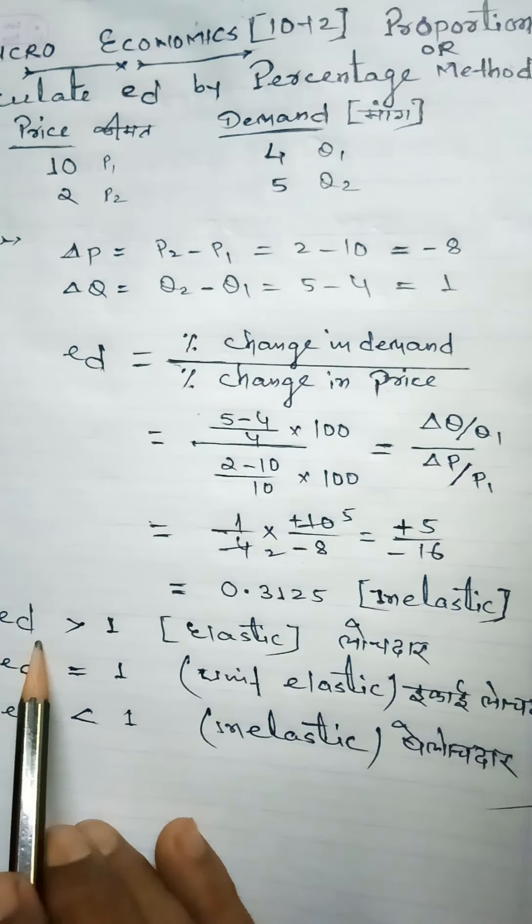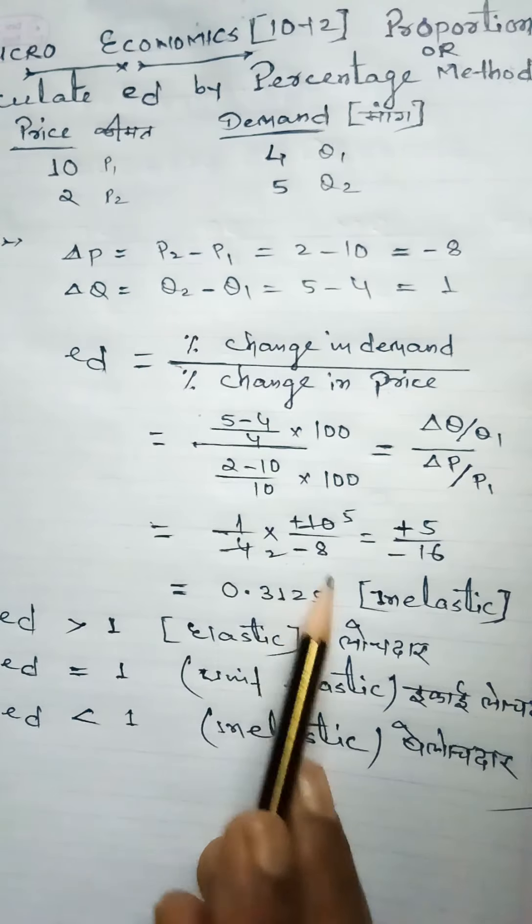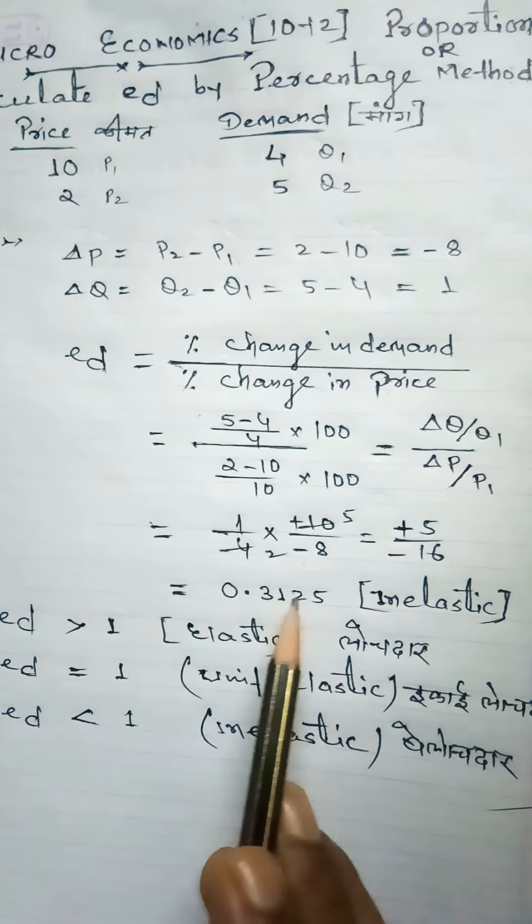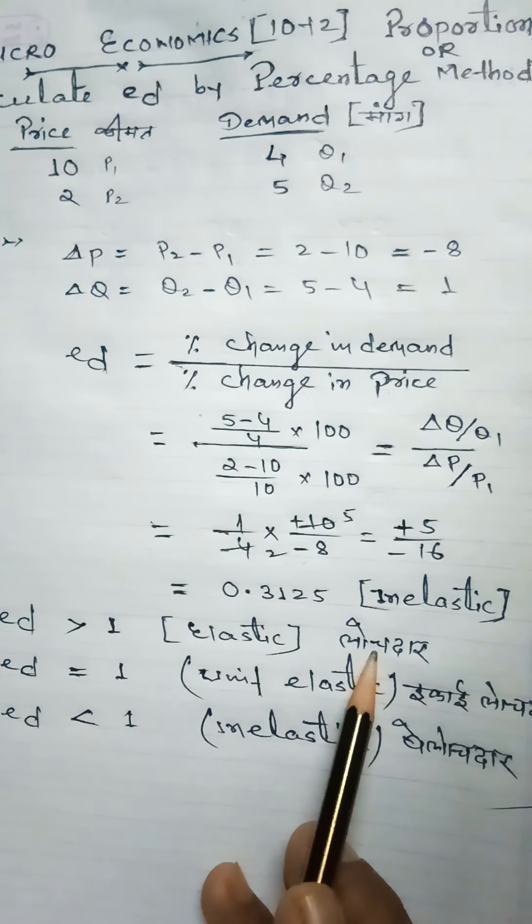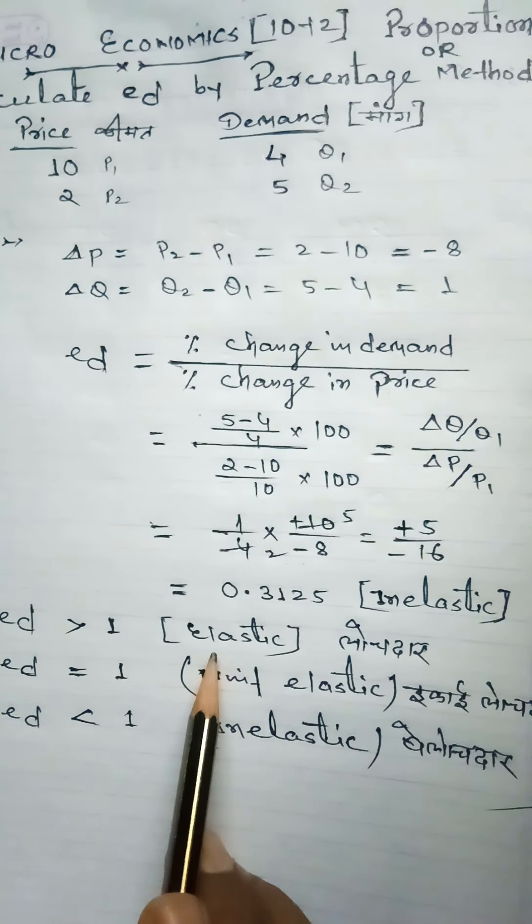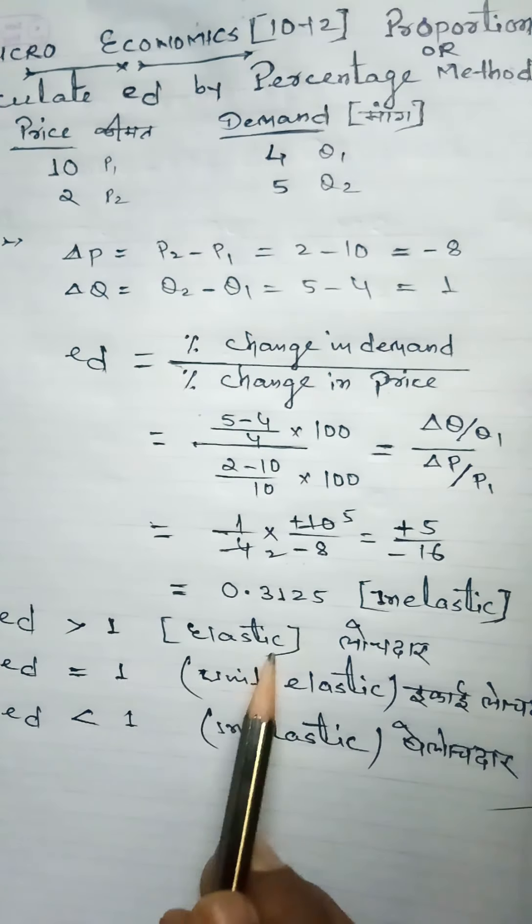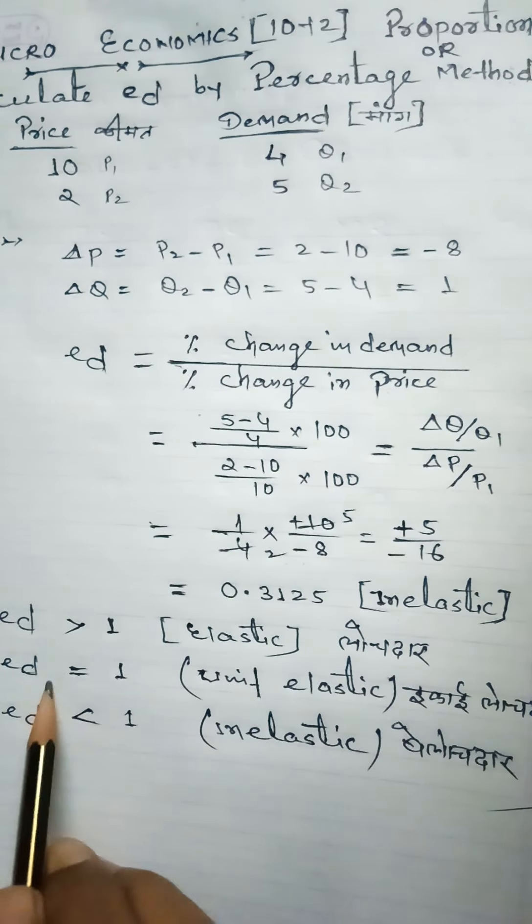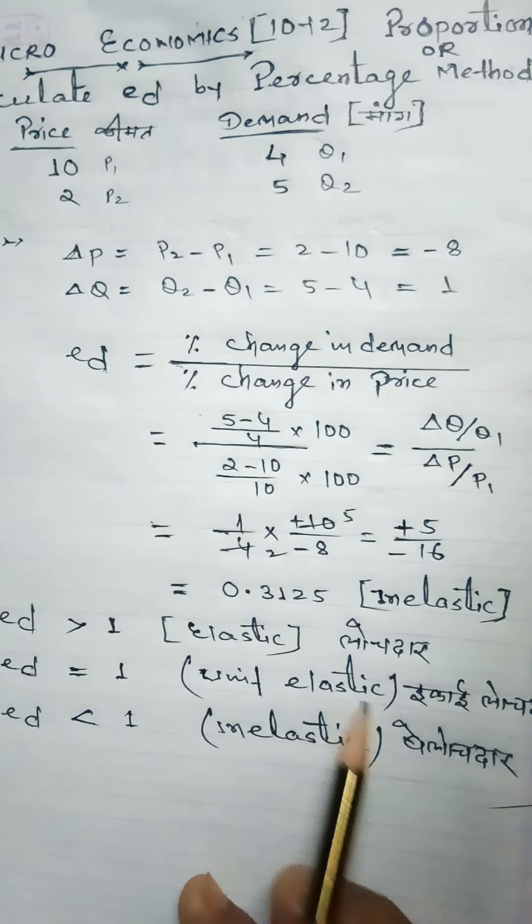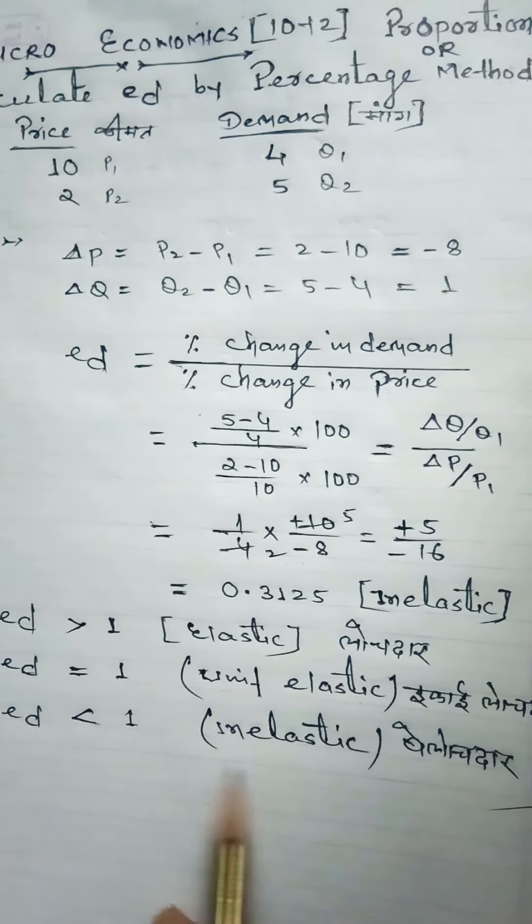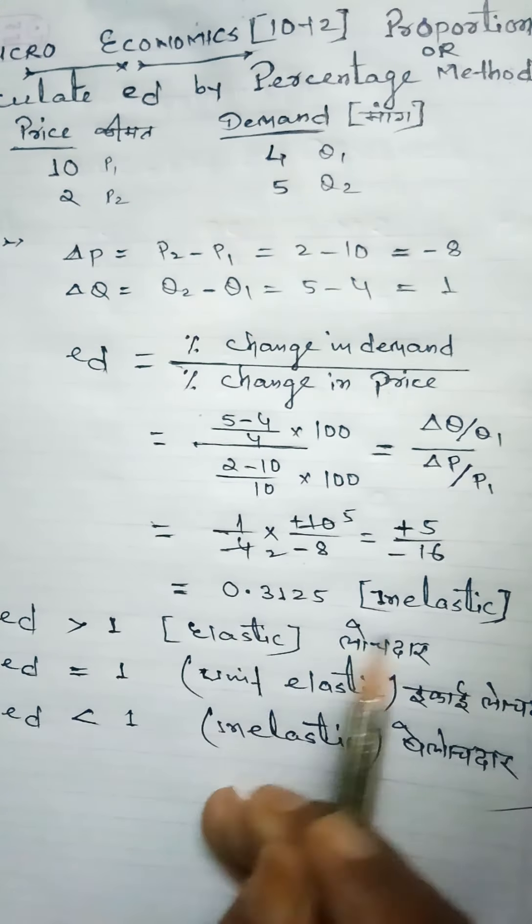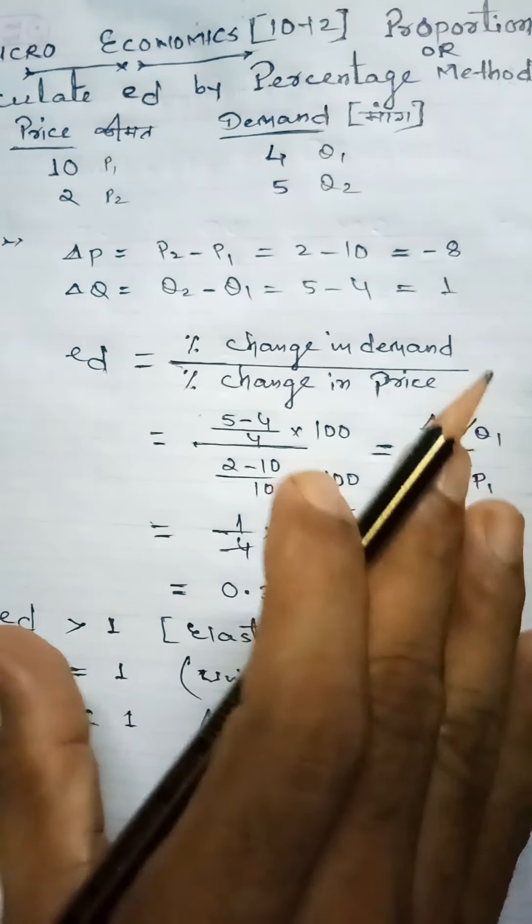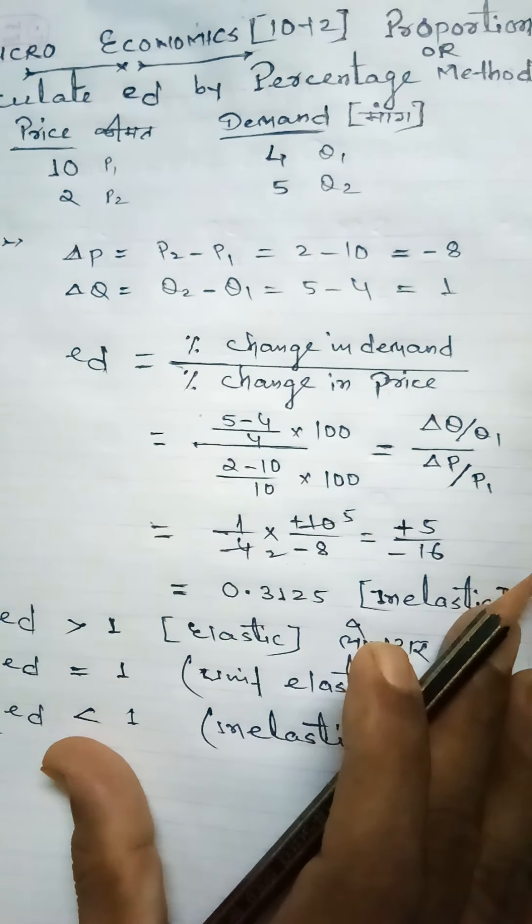The result is 0.3125, which is inelastic. When ed is greater than 1 it's elastic, equal to 1 is unit elastic, and less than 1 is inelastic. This is how you solve these sums with the help of percentage method and proportionate method.